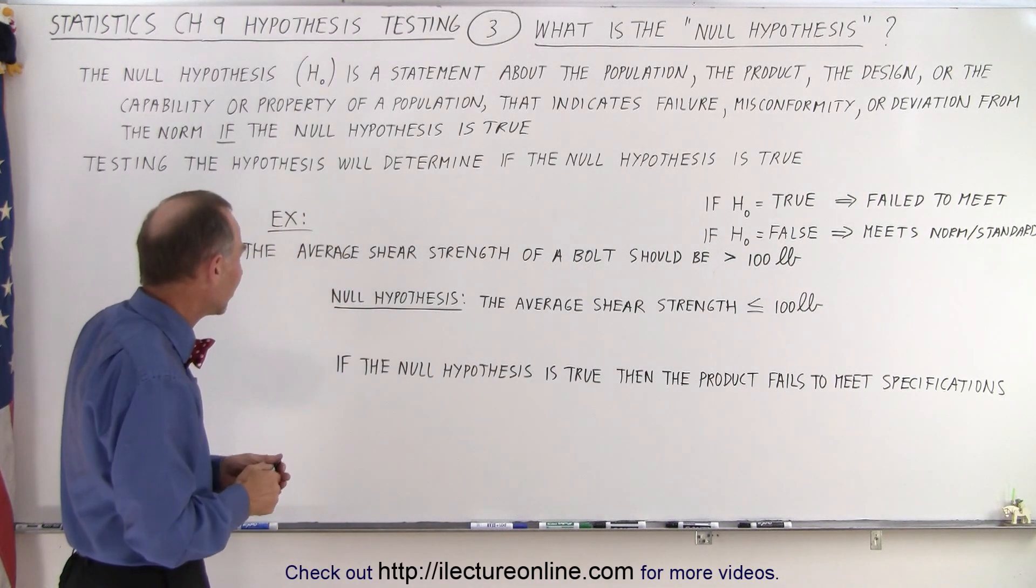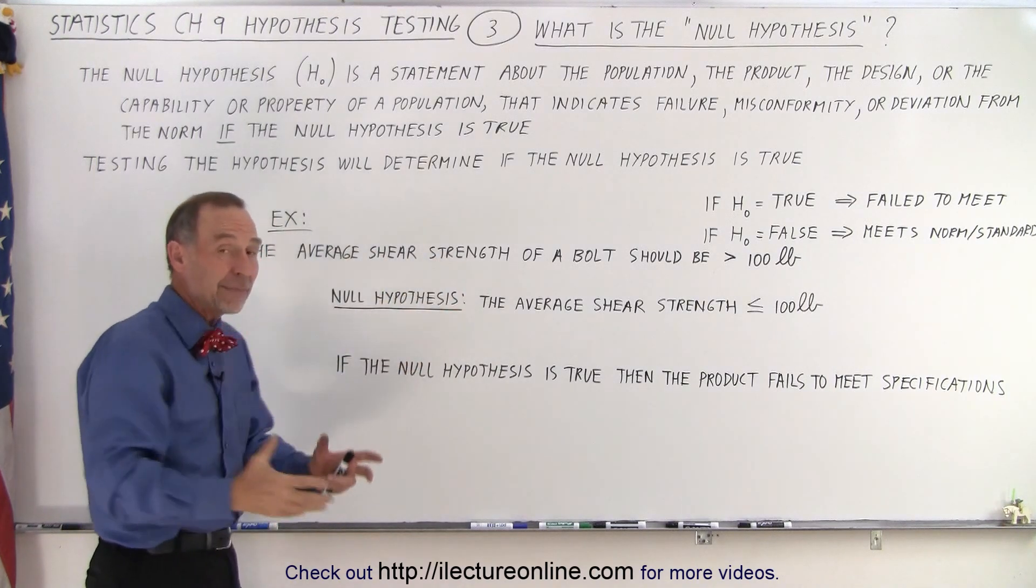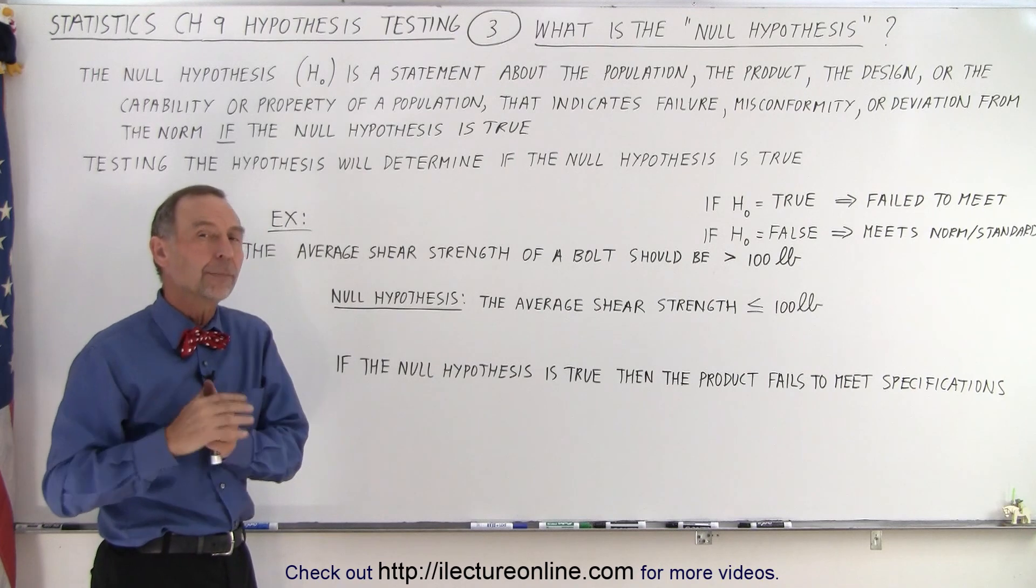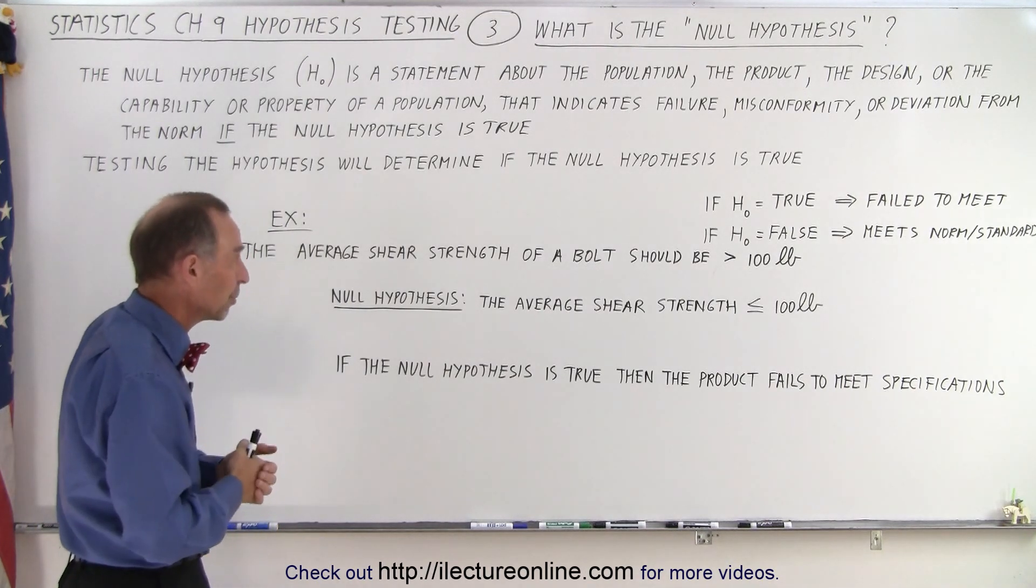So as an example, let's say that the average shear strength of a bolt being manufactured should be at least 100 pounds, should be more than 100 pounds.